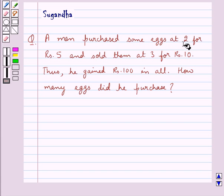A man purchased some eggs at 2 for Rs. 5 and sold them at 3 for Rs. 10. Thus he gained Rs. 100 in all. How many eggs did he purchase?